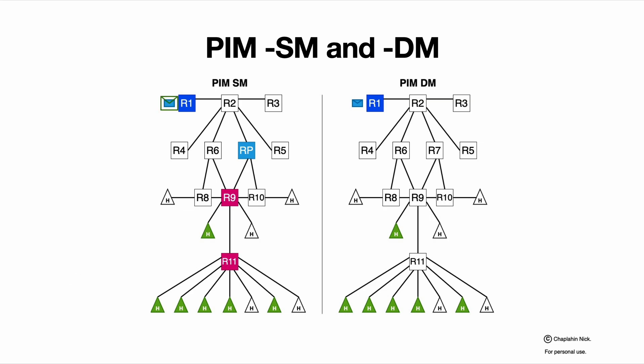And let's traffic run. So from R1 to rendezvous point in PIM-SM Sparse mode, it goes as unicast. It's wrapped into a unicast frame and goes as unicast.